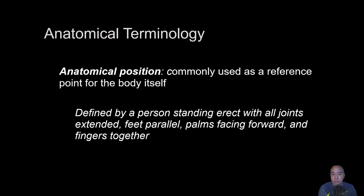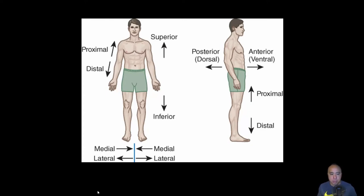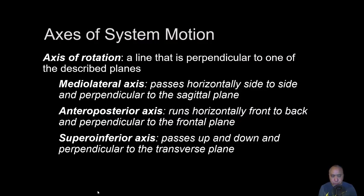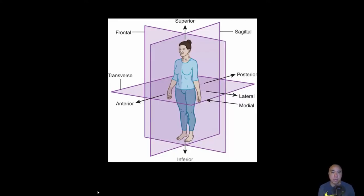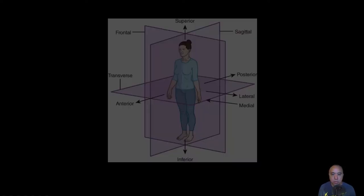Now we'll do a quick review of anatomical terms, which you should already be familiar with from applied kinesiology or anatomy. We describe positions of joints and segments using anatomical terms with respect to planes of motion and axes of rotation. These are terms like proximal, distal, superior, inferior, medial, lateral, and anterior-posterior. The axis of rotation is a line perpendicular to one of the planes of motion — sagittal, frontal, and transverse. The medial-lateral axis passes horizontally side to side and is perpendicular to the sagittal plane.